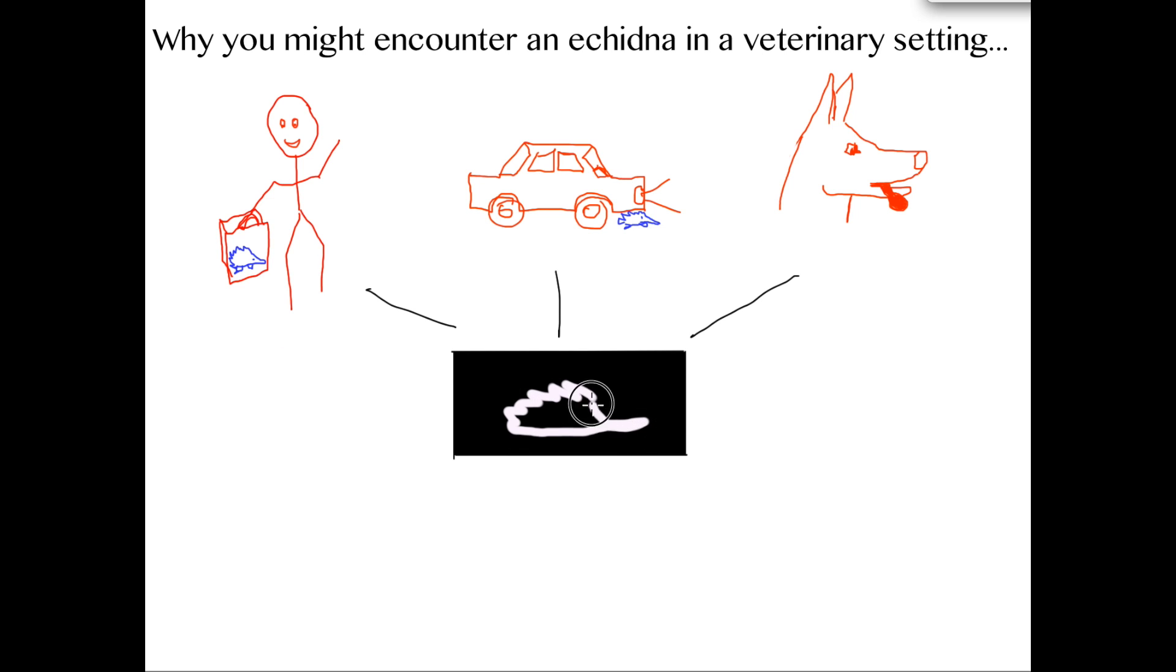If the echidna is healthy, then it should be returned to within 50 meters of the location where it was found. If minor injuries that will not impact future survival in the wild are detected, echidnas can be placed in short-term care until they are able to be released to their original home range.